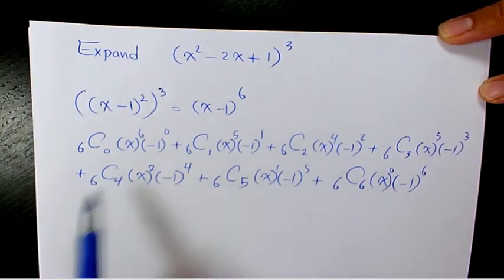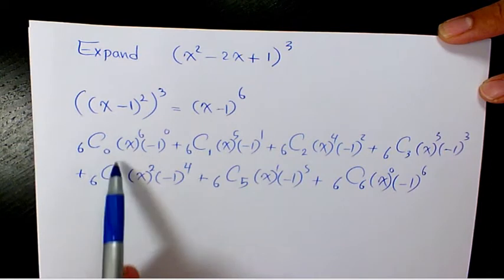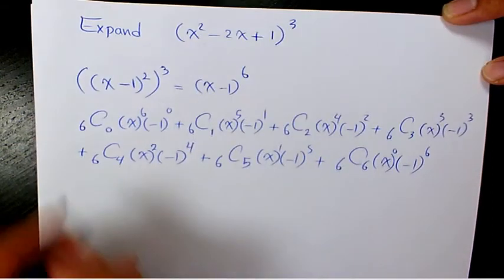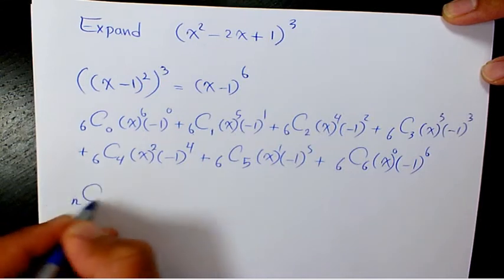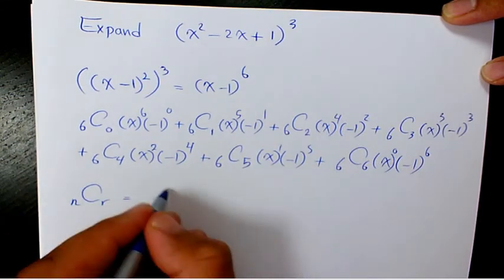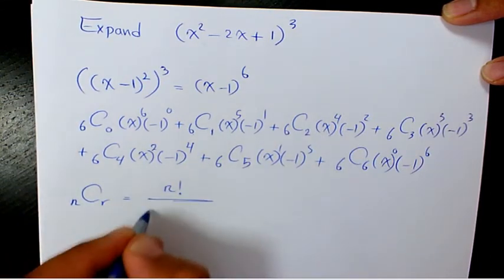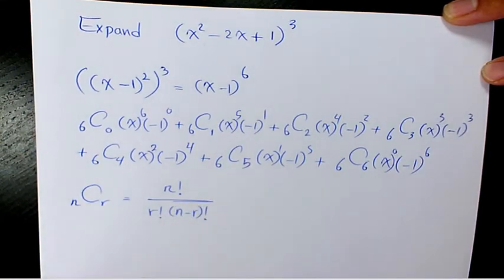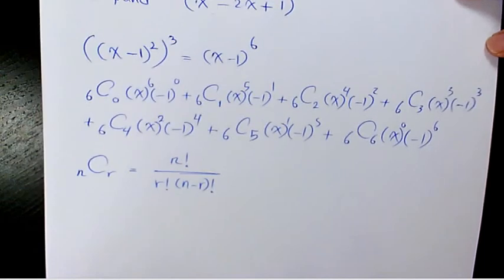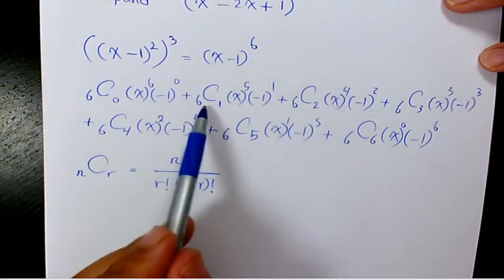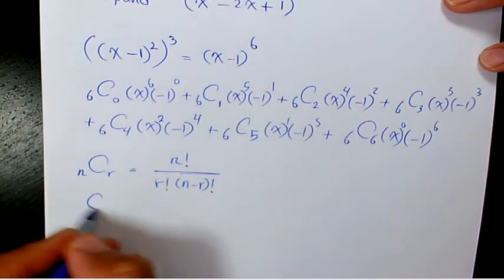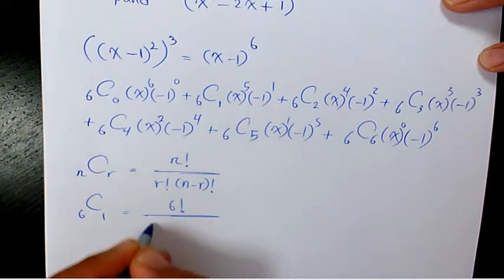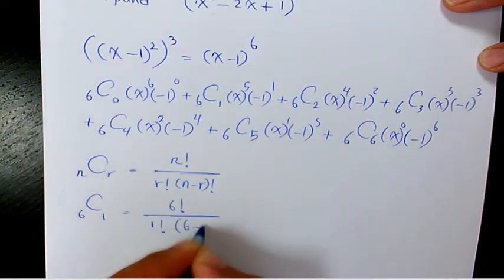Now we need to find out the coefficients which are 6C0, 6C1, and so on. How do we find it? If we have nCr we can use this formula: n factorial over r factorial times n minus r factorial. For example, if we have 6C1 it's going to be 6 factorial over 1 factorial times 6 minus 1 factorial.